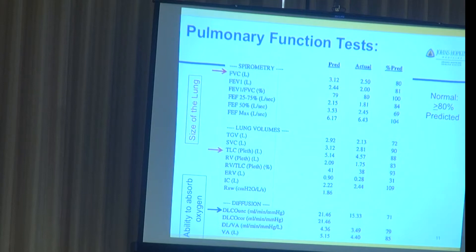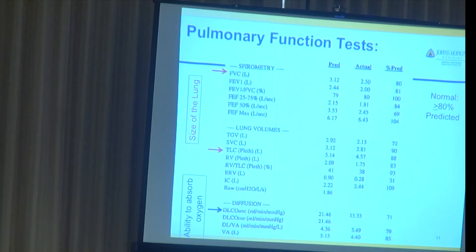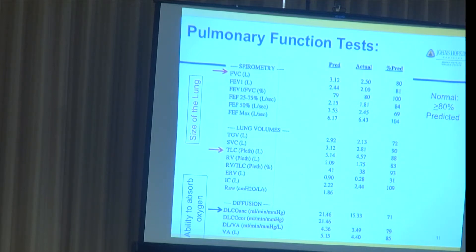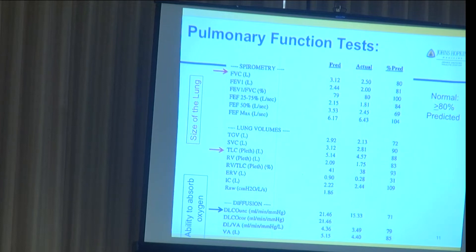For the DLCO, you only get to try twice: take one big breath in, hold it, blow it out — that's all. If you don't get within 10%, it will also show as a poor quality study. It just tells us that these numbers are a little wobbly — maybe a little more, maybe a little less. It's not meant as criticism; it's just meant to allow your doctor to know how much weight to put on that number — whether it's a solid number or there was some variability.